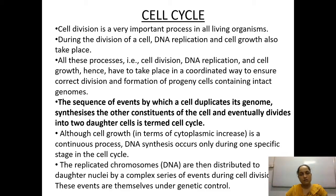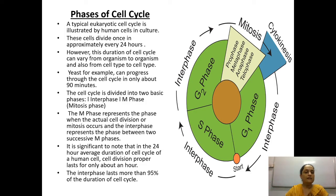DNA synthesis occurs only during one specific stage in the cell cycle. The replicated chromosomes — having copied their DNA — are then distributed equally into the daughter cells by a complex series of events during cell division. These events are themselves under genetic control.